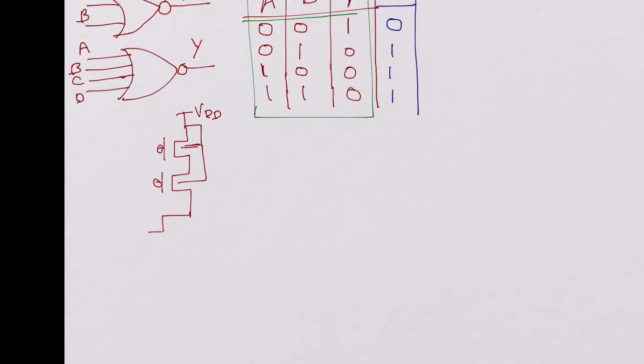Then you have two NMOS devices connected in parallel, and their sources are connected to ground and their bulks are grounded to the substrate.